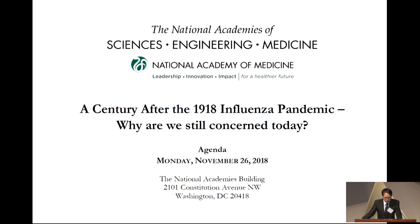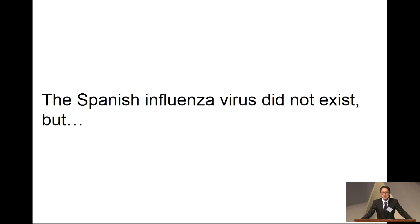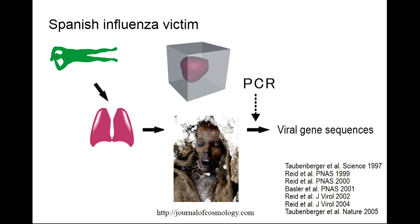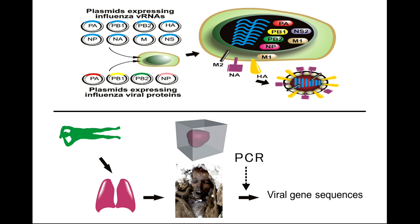The theme of this meeting is a century after the 1918 influenza pandemic, so I'm going to use Spanish influenza as an example to address this question. Spanish influenza virus did not exist today, but Jeffrey Taubenberger's group sequenced the entire genome of the 1918 virus. Back in 1999, we established a technique called reverse genetics, which allows us to make influenza virus from cloned cDNA — a sequence. With the sequence information of Spanish influenza virus and this technology, we can now address this question.